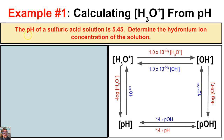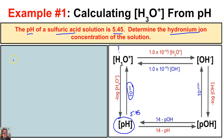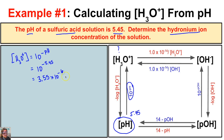Let's take a look at this first example. It says the pH of a sulfuric acid solution is 5.45 and we want to determine the hydronium ion concentration. Anytime you know the pH and want to figure out the hydronium ion concentration, we just take 10 to the negative whatever the pH is. So we'll take 10 to the negative 5.45 and we're going to end up with a concentration equal to 3.55 times 10 to the negative 6.